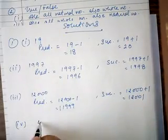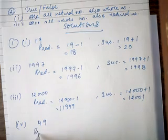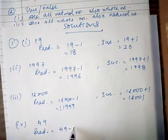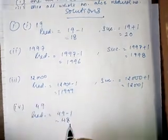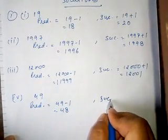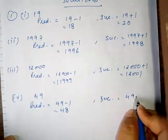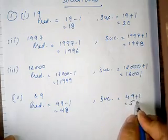Next is 49. The predecessor is 49 minus 1, which is 48. And the successor is 49 plus 1, equal to 50.